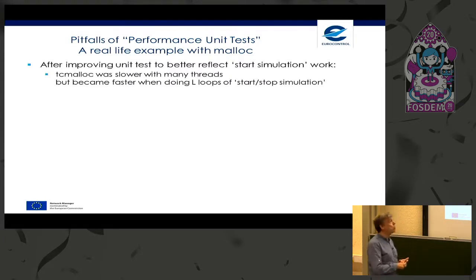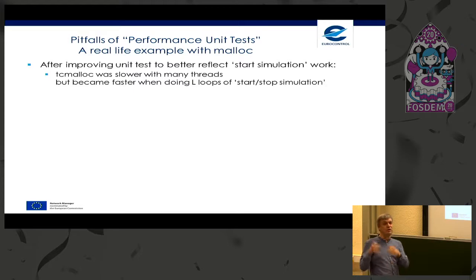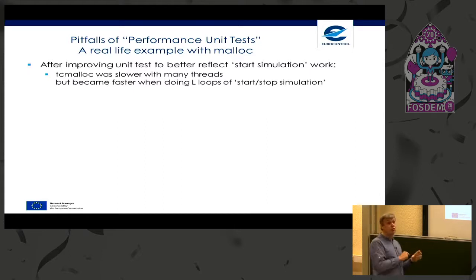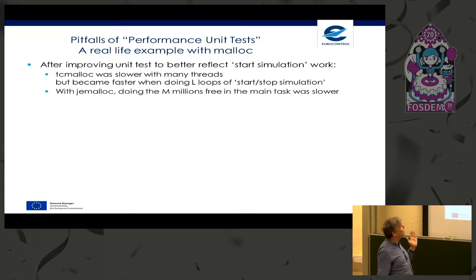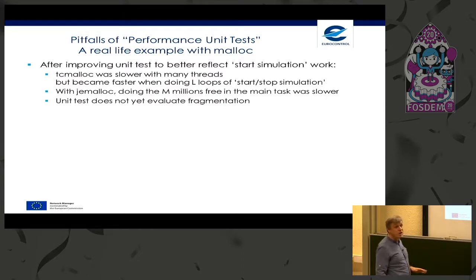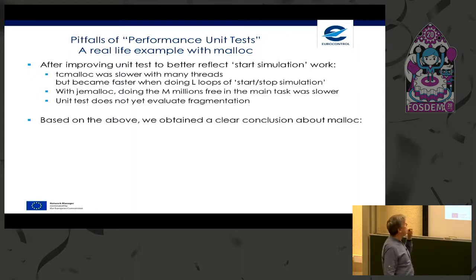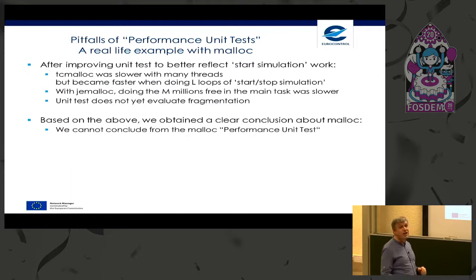The conclusion was: more work needed on the unit test to better simulate the real workload. After improving the unit test, we saw TC malloc was slower with many threads but became faster when the unit test was doing multiple loops simulating start-stop simulation. With JE malloc, doing the million frees in the main task was slower — and when stopping simulation it is the main task doing the free. The unit test also doesn't evaluate fragmentation. The very clear conclusion from the malloc performance unit test is that we cannot conclude from the malloc performance unit test.